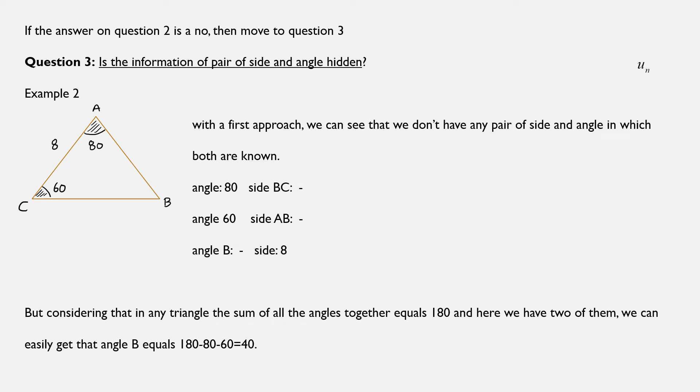Let's assume now that the answer in question 2 was a no. We don't have a side and an opposite angle to be known. Now we will have to move to question 3, which looks similar to question 2. Because question 3 states, is the information about the pair of the side and the opposite angle anyhow hidden? Let's see an example.